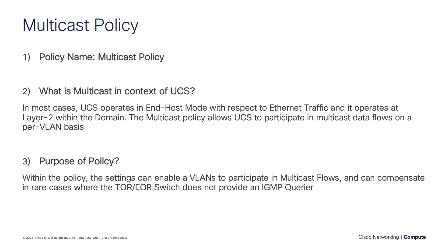So the multicast policy — what is it in context of UCS? In most cases UCS is operating in end-host mode on the Ethernet side, so it is layer two throughout the domain. The multicast policy gets created and assigned to the VLAN, which gets assigned to your NICs.